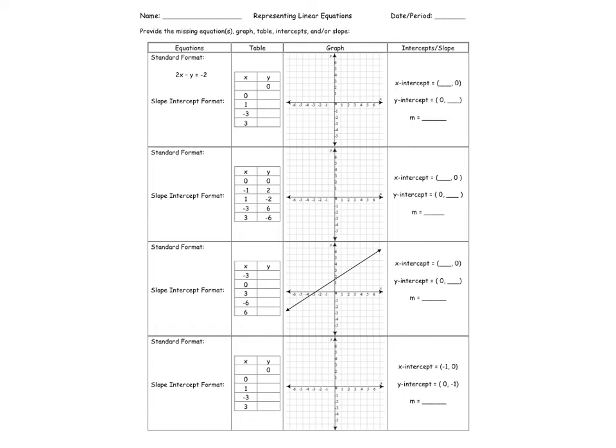Lines also have x-intercepts and y-intercepts. Lines also have slope. So what you're going to be doing is you're going to be completing each of these missing components using the clues that are given. So for example, in this first box, you're given the standard form.